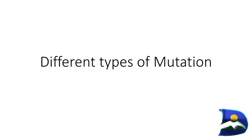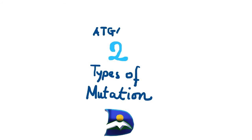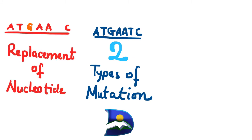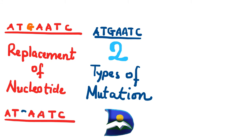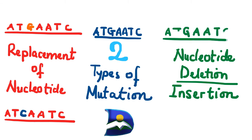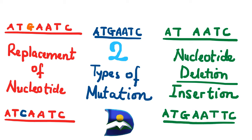There are two major types of mutations. One involves replacement of nucleotides, and the other is nucleotide deletion or insertion. In this video we're going to look at both and apply them to a real example and also to COVID-19, and how this is going to be crucial for our specific variant case scenario. First, we'll look at replacement of nucleotides.